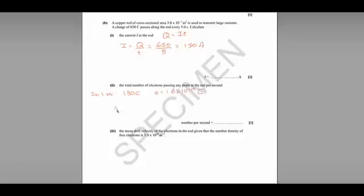So to find out the number N, the number of electrons passing the point, we need to divide 130 by 1.6 times 10 to the minus 19. And that gives us 8.13 times 10 to the power of 20 electrons per second.